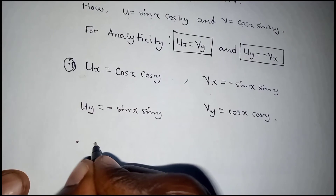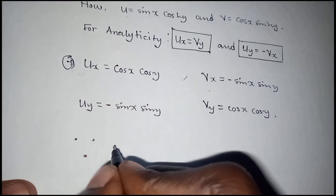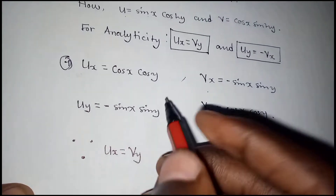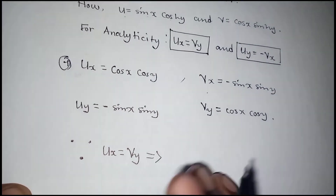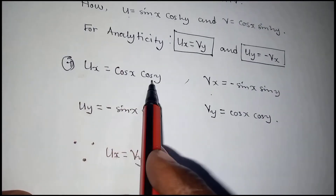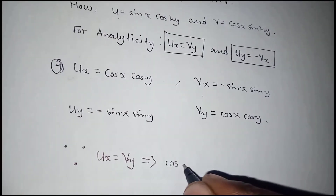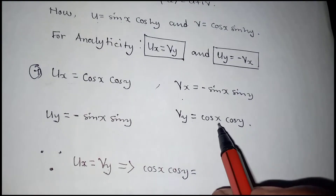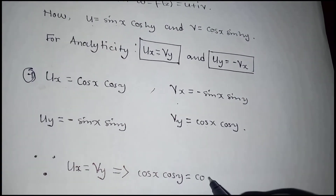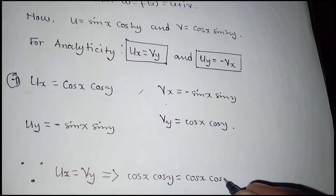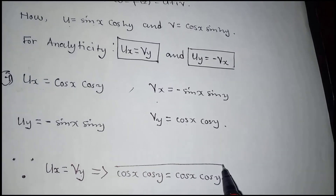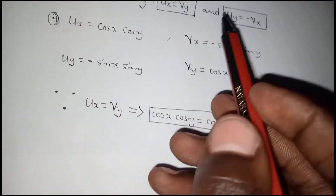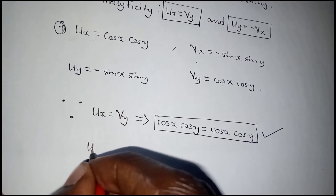Now we have all four partial derivatives needed to test for analyticity. The first condition says the partial of u with respect to x should equal the partial of v with respect to y. We have cos x cosh y on both sides — this condition is satisfied. There are only two conditions, so the first one has been met.